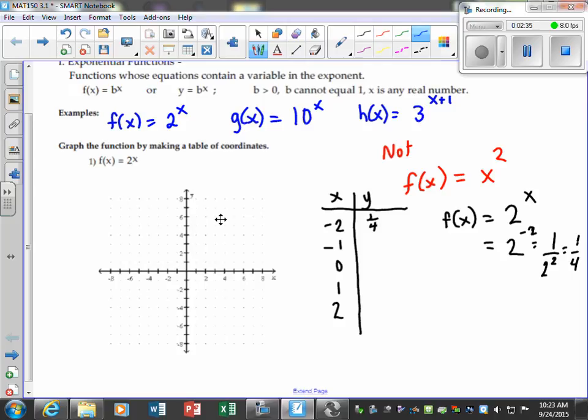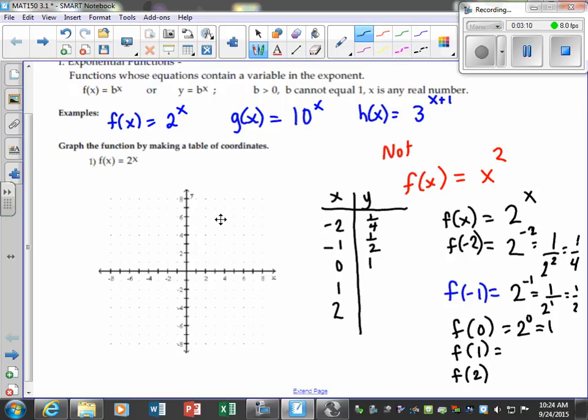So let's evaluate f at negative 1, because that was f evaluated at negative 2, so that means we would have 2 to the negative 1 power, which would be 1 half. What is anything raised to the 0 power? That's just going to be 1. Now, go ahead and evaluate f at 1, and evaluate f at 2. So when we evaluate f at 1, we just get 2 to the first power, which is just 2. And for this one, we would get 2 to the second power, which is 4.